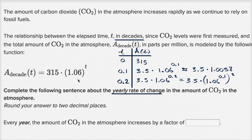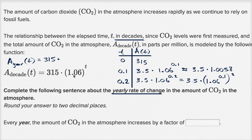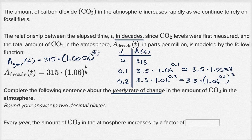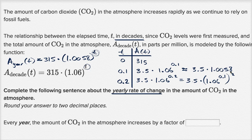Another way to think about it: if we want to reformulate this model in terms of years, per year the amount A(T) is going to be 315, and now our common ratio wouldn't be 1.06 — it would be 1.06 to the 0.1 power, or approximately 1.0058, and then we raise that to T where T is now in years. So every year, the amount of CO2 in the atmosphere increases by a factor of approximately 1.0058.